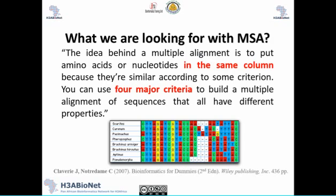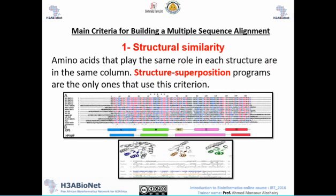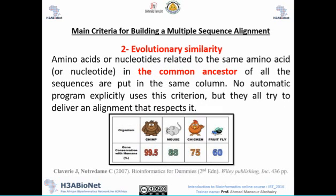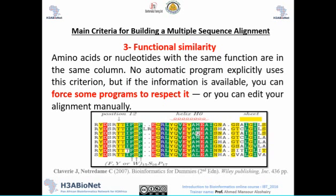There are four criteria scientists look for in a multiple sequence alignment. The first is structural similarity — you look for structure superposition, meaning positions with the same amino acids or nucleotides that have structural meaning. The second is evolutionary similarity — you look for a common ancestor through homology, which leads to understanding evolutionary relationships.